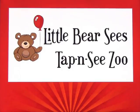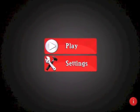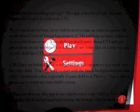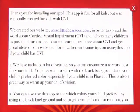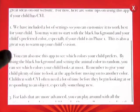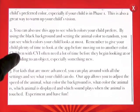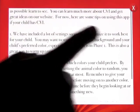This app is called Little Bear Sees, Tap and Sees Zoo, and it was created for children that have CVI — Cortical Visual Impairment. It has a lot of options, and you can see what's included in the app right here.